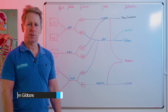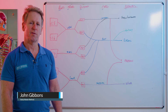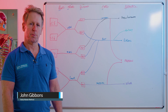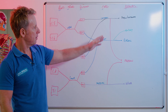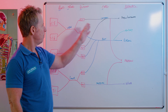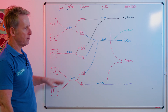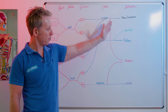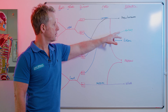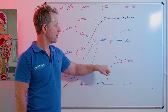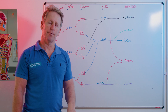Hi, my name is John Gibbons and I'm going to talk to you today about the brachial plexus, mainly the branches that come from C5 to T1. These are the terminal branches: the musculocutaneous, the axillary, the radial, the median, and the ulnar nerve.